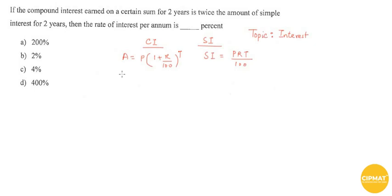If we want to find out the compound interest, it should be A minus P.